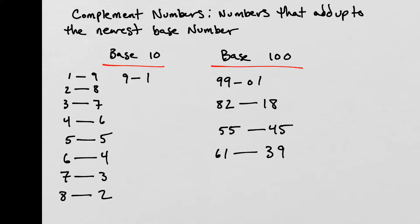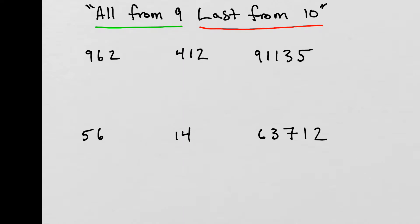I'm going to show you a quick way using a word formula to find complement numbers very fast. For Vedic Maths, here is our first word formula: 'All from 9, last from 10.' What that means is we're going to subtract all the digits from 9, but the very last digit we subtract from 10. This is a quick way to find complement numbers.